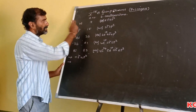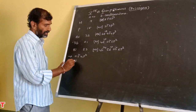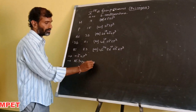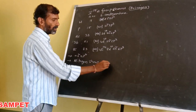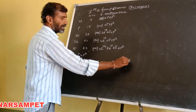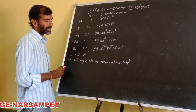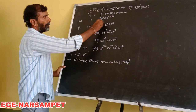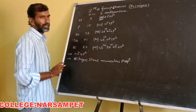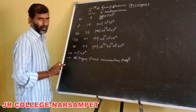Except nitrogen, all other elements show anomalous properties. Nitrogen shows anomalous properties because of different electron configuration present in the penultimate shell.